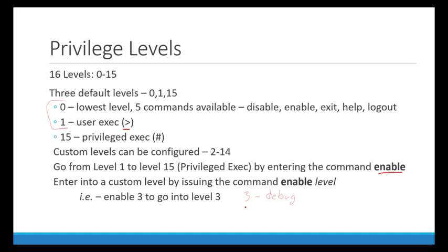So if I configure level 3 and add 'debug' as a command, level 3 now has all commands available at level 1 and 0, plus debug. Then if I create level 4 and add 'show tech support', level 4 has everything in level 1, plus debug, plus show tech support — illustrating that a higher privilege level inherits all commands from lower levels.